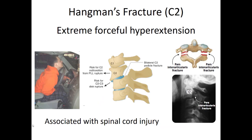Hangman's fracture — despite the name — is rarely seen in hangings. We usually see it with extreme forceful hyperextension, such as when a patient's chest and head impact a steering wheel, forcing the head back. This causes the vertebral bodies to slip over each other, and critically, the spinal cord in between those bodies is injured as well. This fracture is highly associated with spinal cord injury, and patients with this type of fracture will likely have neurological deficits.